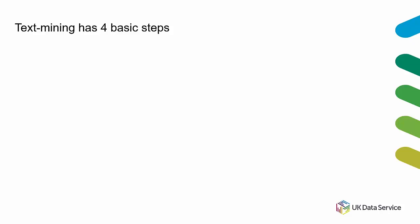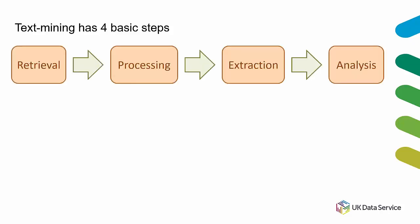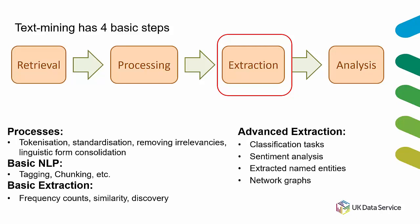If you attended either of our previous two webinars in this text mining series, you may remember that text mining has four basic steps: retrieval, processing, extraction, and analysis. Today we are focusing on extraction — specifically two advanced options. These are more advanced than what we covered last time but build on the same skills. Specifically, today I cover classification tasks including sentiment analysis, and entity extraction especially as it relates to creating social networks and network graphs.